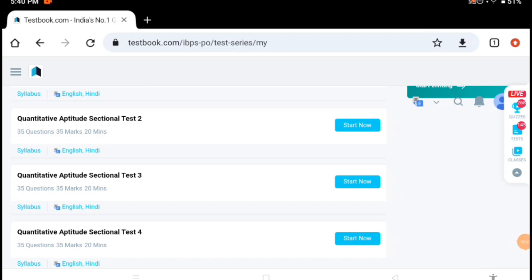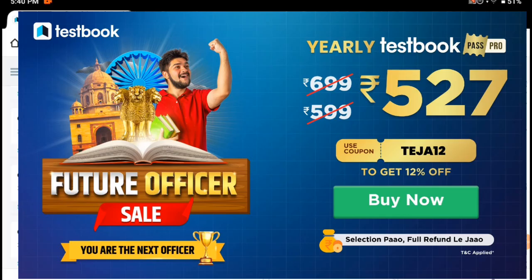Hi everyone, welcome back to my channel. In Testbook KF Future Officer sale starts from August 1st onwards. In this sale yearly Textbook Pass Pro cost only 527 rupees, its actual price is 699. On the occasion of this sale it cost only 527 rupees if you will use my coupon code TAZ12 to get extra 12% offer on this 527 and also remaining plans.